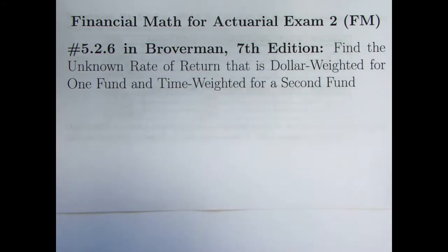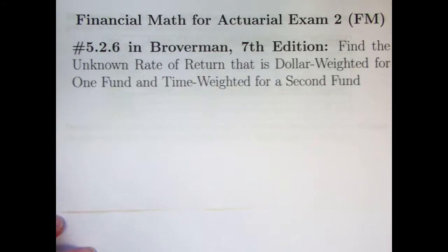Here we're making one more video about dollar-weighted and time-weighted rates of return before we get into some other stuff that's more conceptually challenging. I thought it was worth doing one more problem where we will be finding the unknown rate of return that is both a dollar-weighted rate of return for one fund and time-weighted for a second fund. The algebra turns out to be a bit nasty in this one. I kept making mistakes when I was working on this before I made this video, so hopefully I'll make this video without any mistakes.